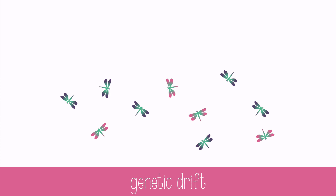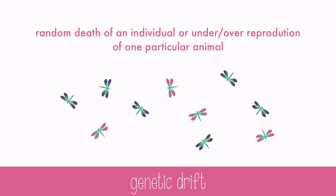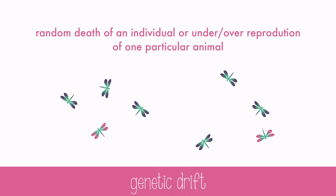Another problem for Hardy-Weinberg equilibrium is small population size, because it can be easily altered by things like genetic drift. Genetic drift is a nice name for the random death or the under or over reproduction of one particular animal. For example, in this population of dragonflies, if I hit a few with my car as I'm passing by, it could greatly change the gene pool, because it's removed genes from the population. Or if one animal was doing the majority of the breeding, this could also greatly change the allele frequencies in the population, leading to evolution.